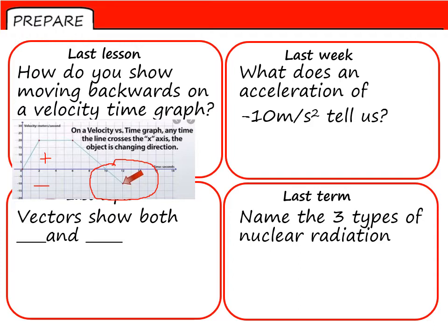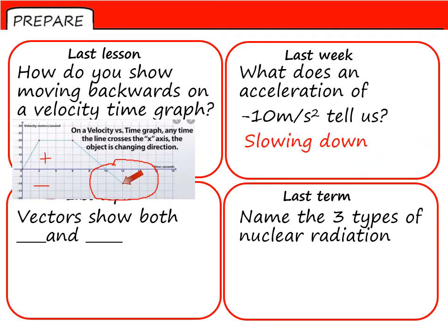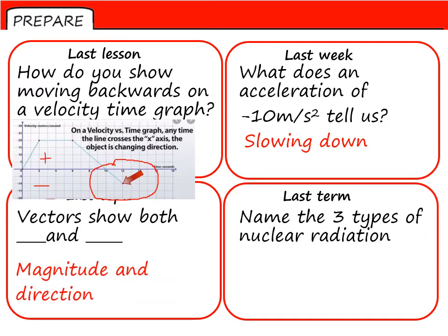The minus 10 again tells us that an object is slowing down — it's the rate of change of speed. Vectors show both size or magnitude and direction. And our three types of nuclear radiation are alpha, beta, and gamma.